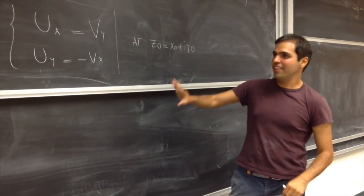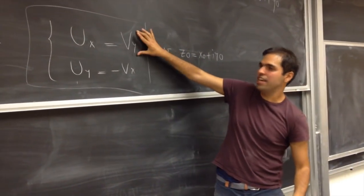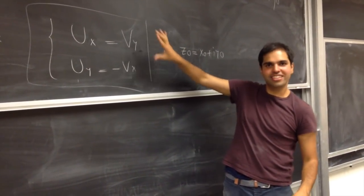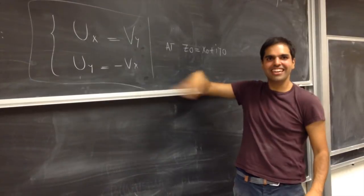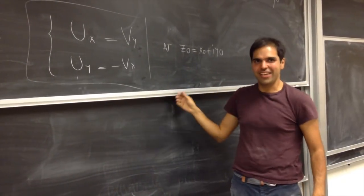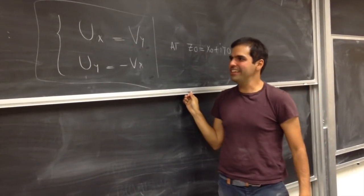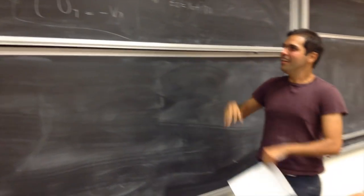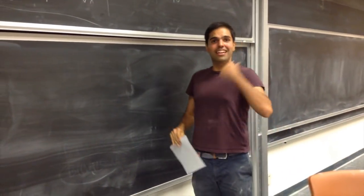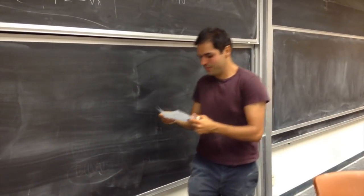Those equations are so important they're called the Cauchy-Riemann equations. I don't think Cauchy came up with the first equation and Riemann with the second one — I think they just came up with it, maybe independently. Okay, great, let's show it.